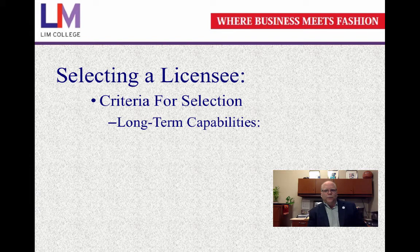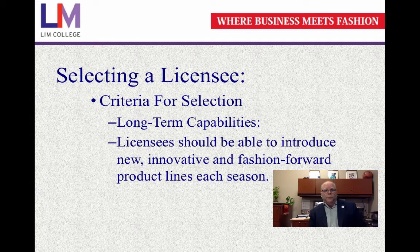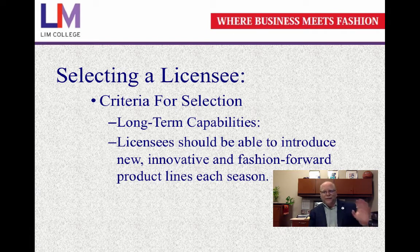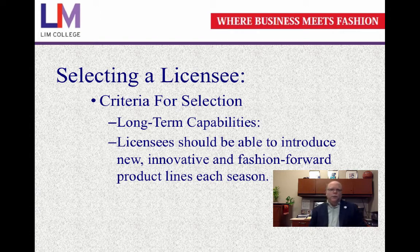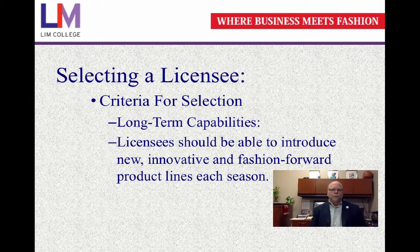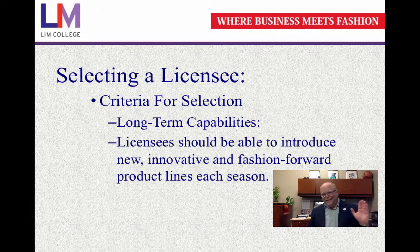Next is long-term capabilities. Has this licensee been around? Have they manufactured for you previously? Will they be there in three years, or in five years? Licensees should be able to introduce new and innovative product lines down the road — each season they need to get new product out there, whether for Christmas, Easter, or the summer months. So what are the long-term capabilities of the licensee? Are they thinking ahead? Are they able to introduce product lines that are innovative and fashion-forward?